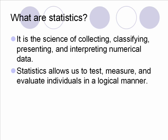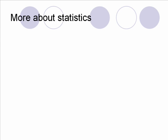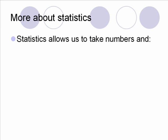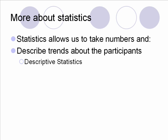We'll talk a little bit later in the lecture about testing a hypothesis. We have talked about the null hypothesis last week. It allows us to measure something — for example, we're going to measure a vertical jump. We measure that, get a number, and turn that number into something useful. Then, after we test and measure that individual, we try to make an evaluation: did that person do well? Was their vertical jump a good jump or not a good jump at all? Statistics allows us to take numbers and to describe trends about the people, the participants. We call this descriptive statistics.